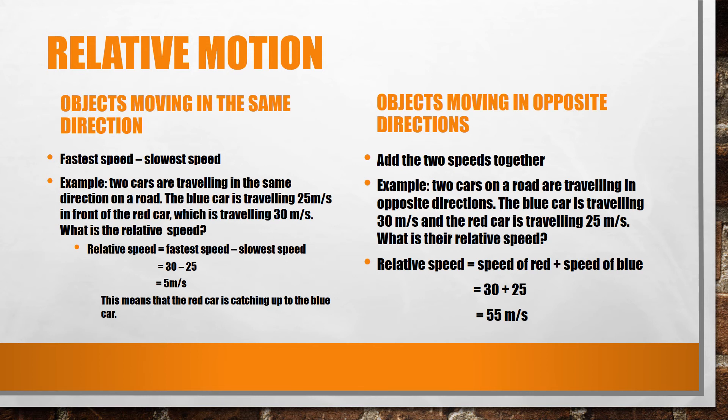For example, if two cars are traveling in the same direction on a road, the blue car is traveling 25 meters per second in front of the red car, which is traveling at 30 meters per second. The relative motion would be the speed of the quicker car, 30 meters per second, take away the slower, which is 25 meters per second. If we do this, we get a relative speed of 5 meters per second.